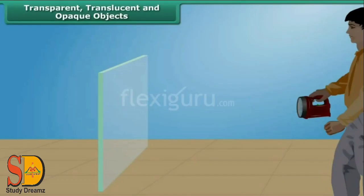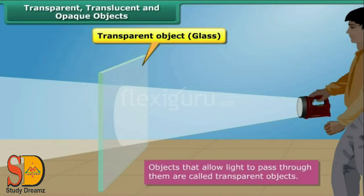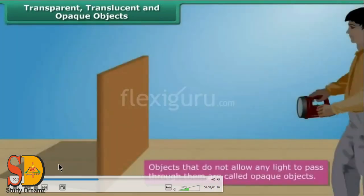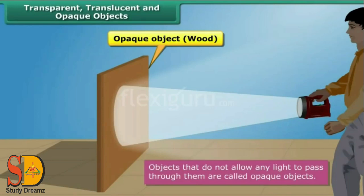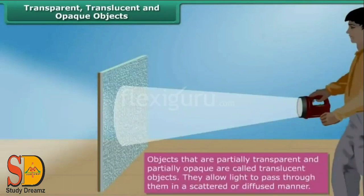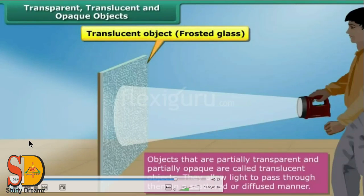Examples of translucent materials are computer screens, designed mirrors, frosted glass, tissue paper, thin plastic, and colored glass. If we shine a torch on a glass sheet, the light passes through completely — so glass is an example of a transparent object. If we do the same experiment with a piece of wood, it does not allow the light to pass through, because wood is an opaque object. When we take frosted glass, only a little portion of light passes through — that's why frosted glass is an example of a translucent object.